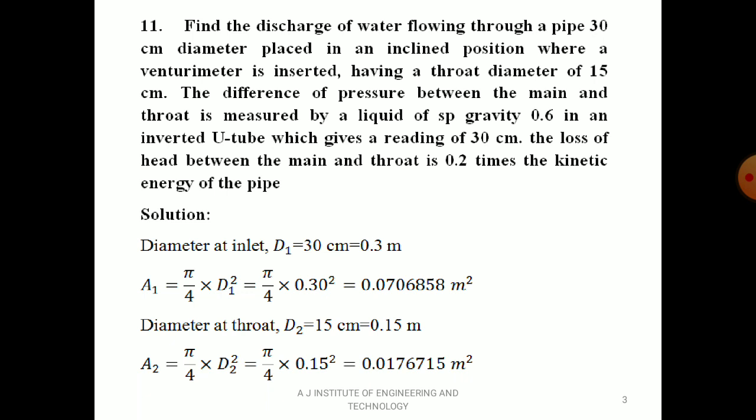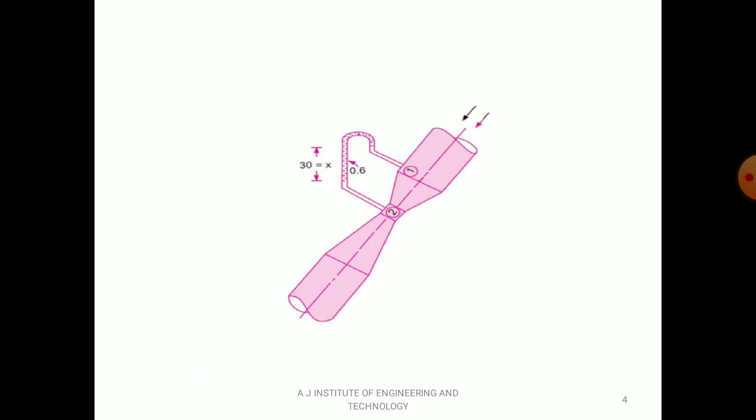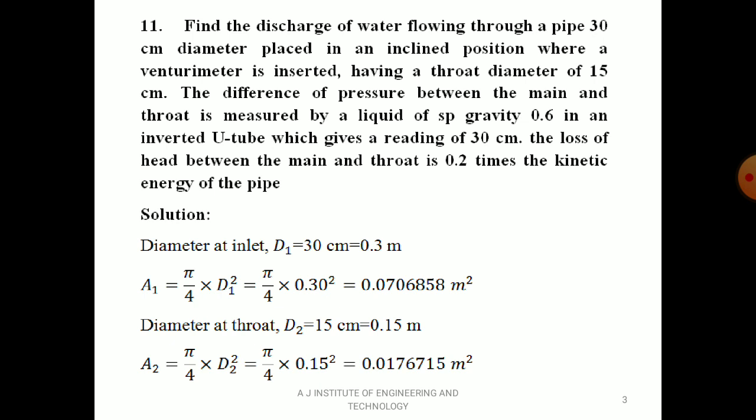Let me go to the solution. First, draw the diagram of an inclined Venturimeter. The fluid flows from section 1 to section 2. There is an inverted U-tube manometer containing manometric fluid of specific gravity 0.6, giving a reading of 30 cm (x = 0.3 m). Diameter at inlet D₁ = 30 cm = 0.3 m, so A₁ = π/4 × (0.30)² = 0.0706858 m².